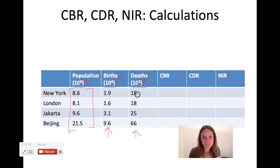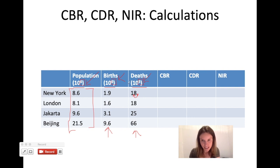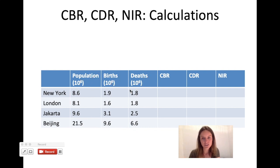To increase an exponent by one, you take the placeholder in the number and move it to the left, because 18 times 10 to the fifth is the same thing as 1.8 times 10 to the sixth. All you're doing is adding a zero in the exponent, so you can take it away from the coefficient. In the next slide I've corrected the data set — we now have the same exponent in all sets of information and we're ready to start calculating.